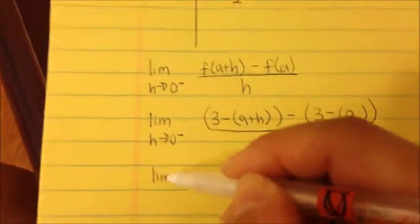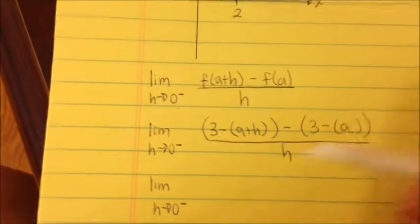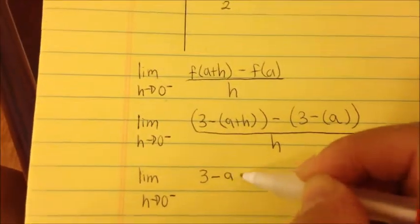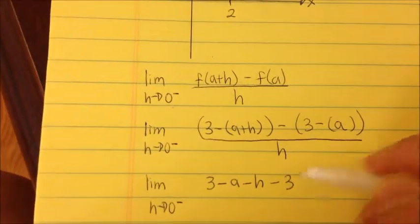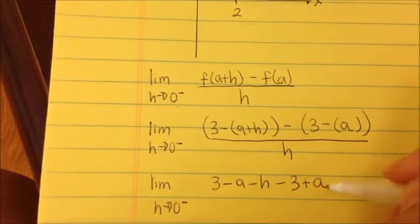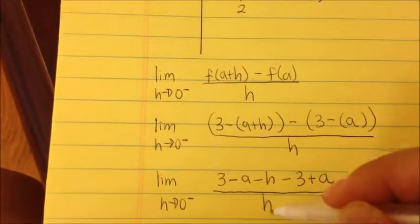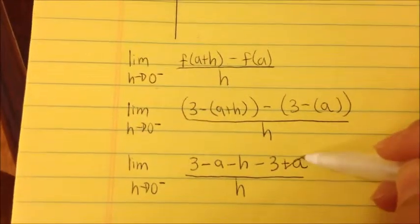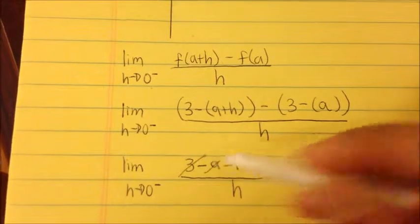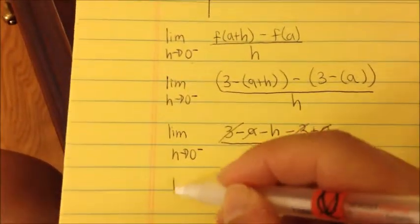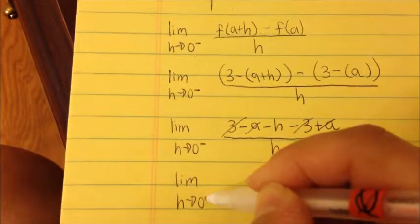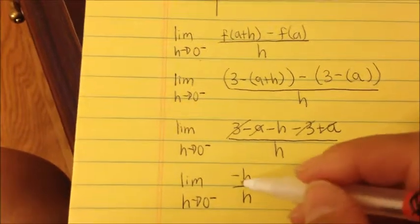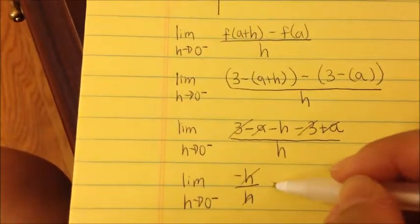Now let's distribute, combine like terms, and clean it up. The limit as h approaches 0 from the left-hand side. Distributing the negative gives us: 3 minus a minus h, minus 3, then plus a — because it's negative times negative — all over h. The a's cancel out, the 3's cancel out, and we're left with the limit as h approaches 0 from the left-hand side of negative h over h. That cancels, leaving negative 1.